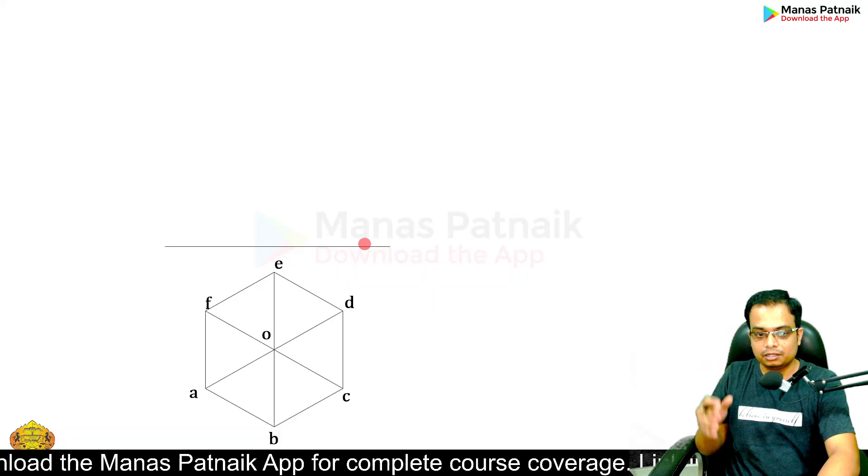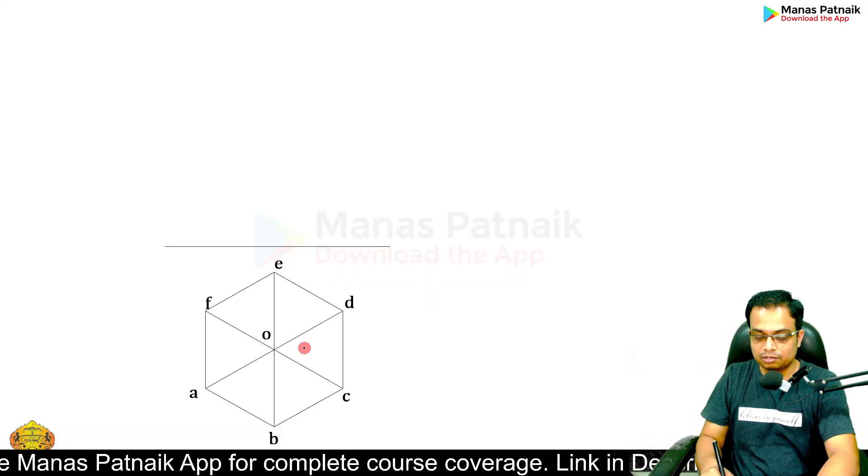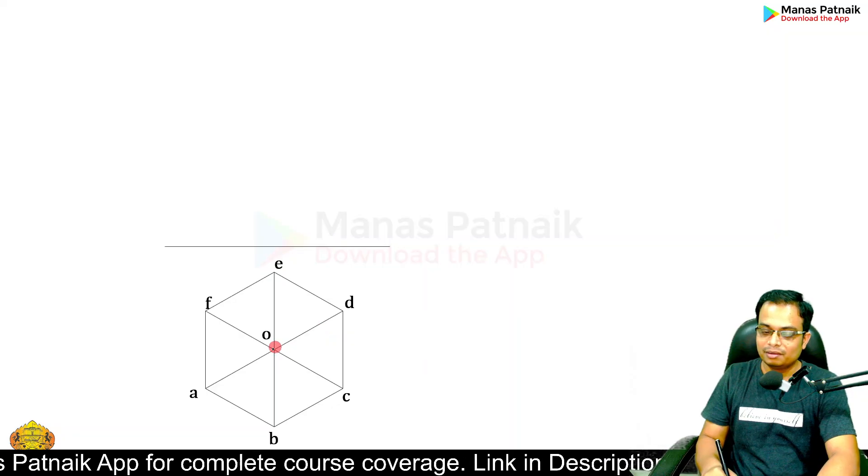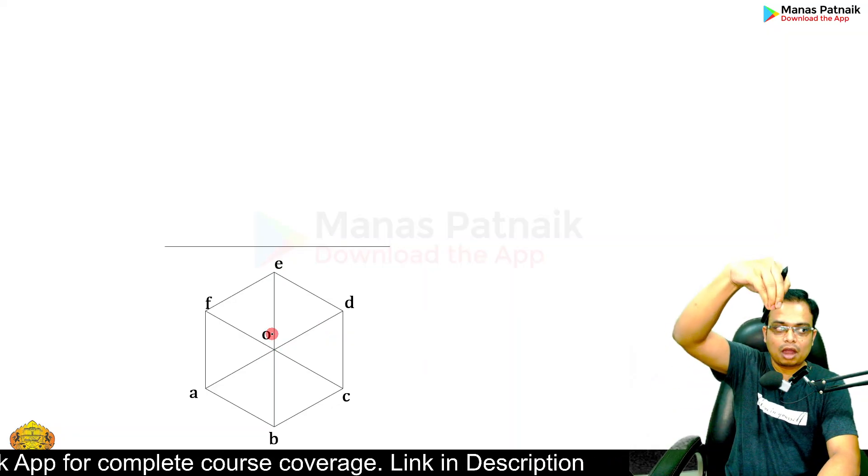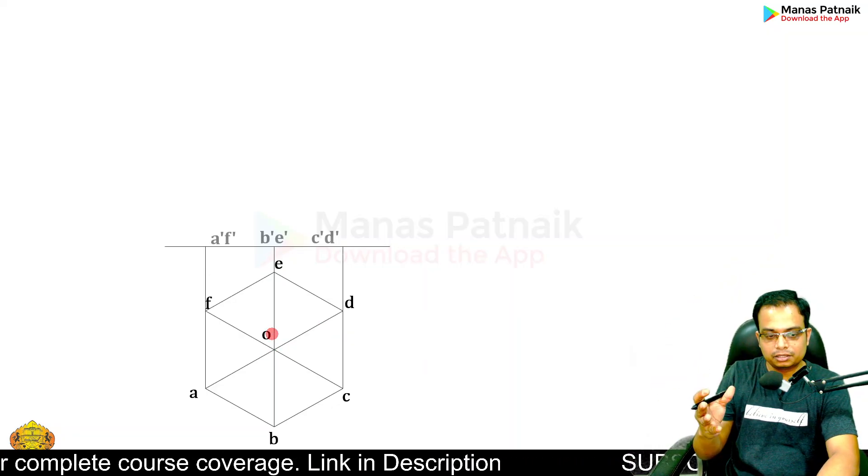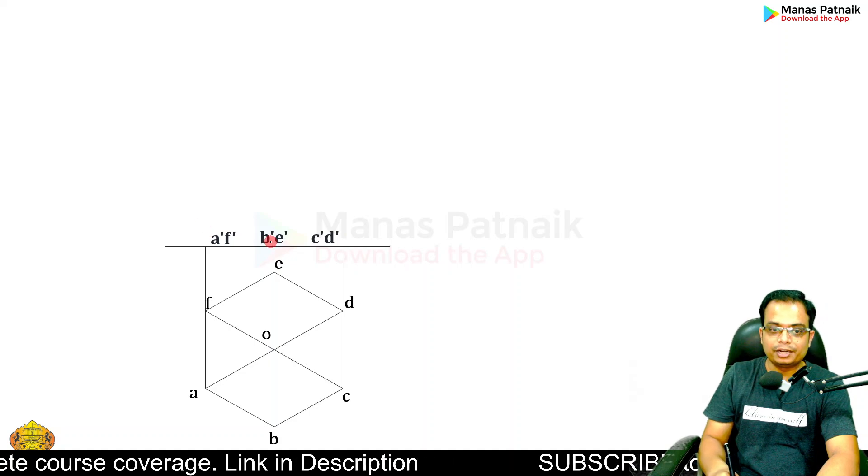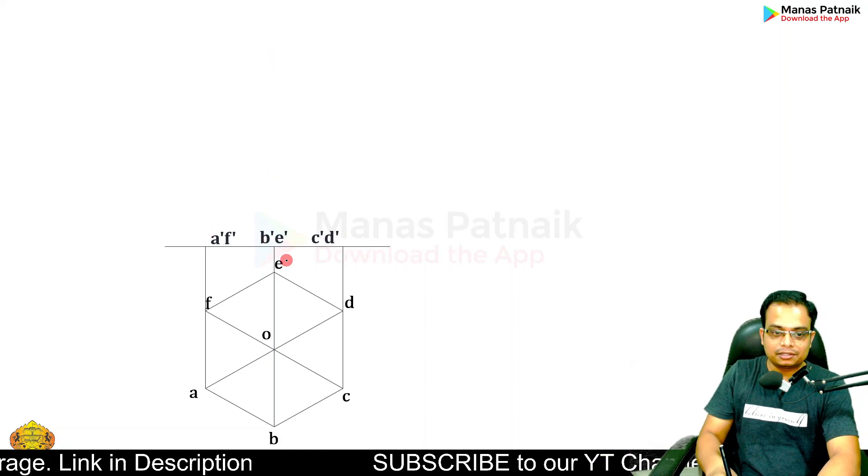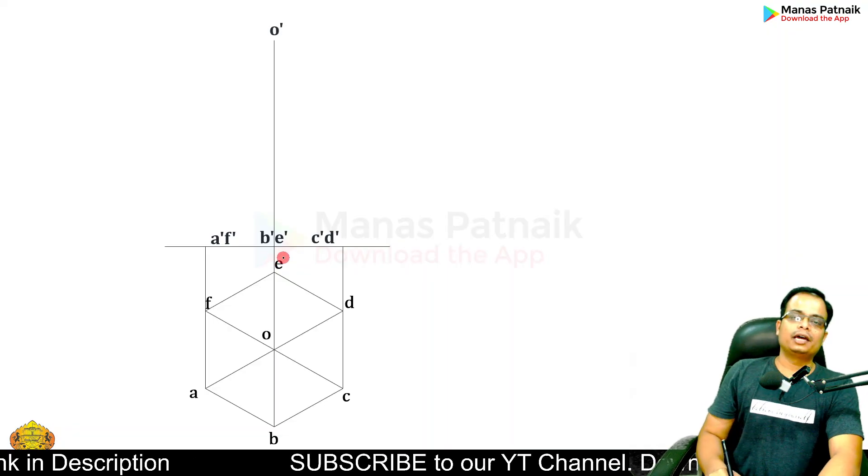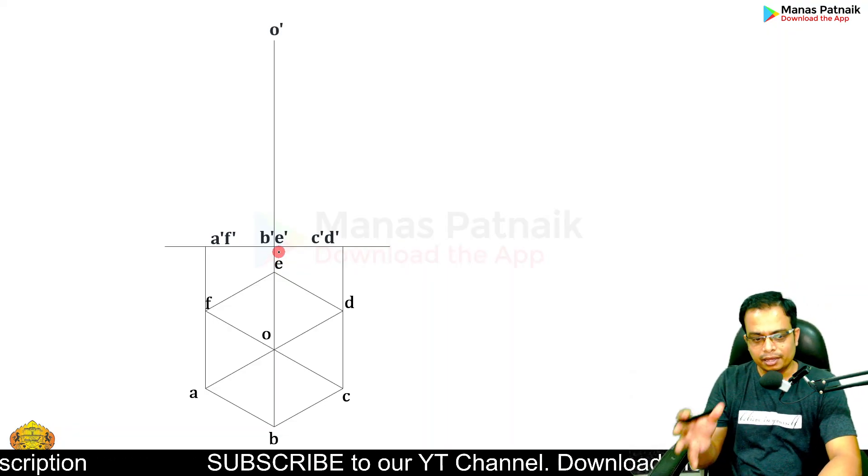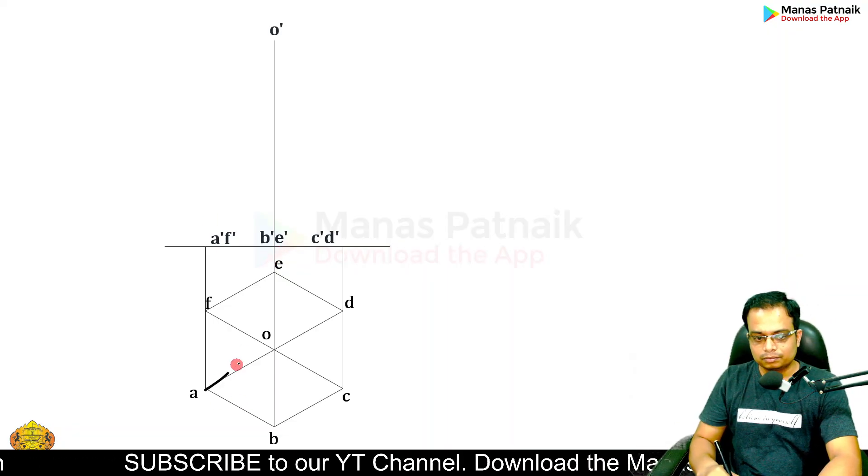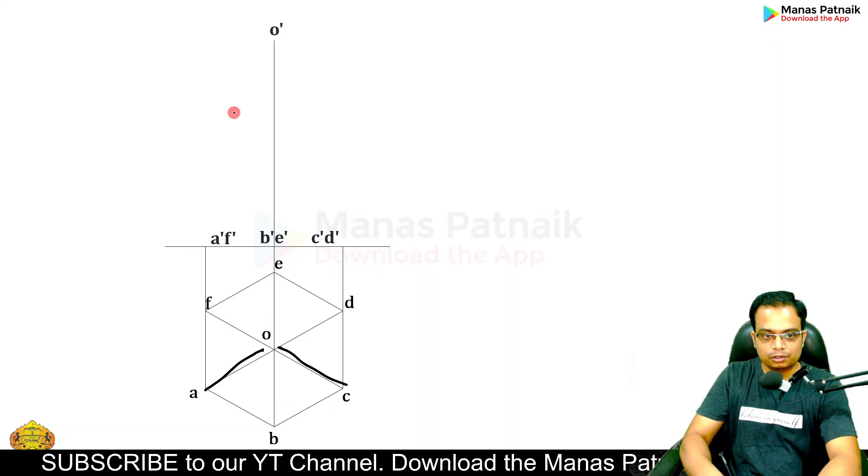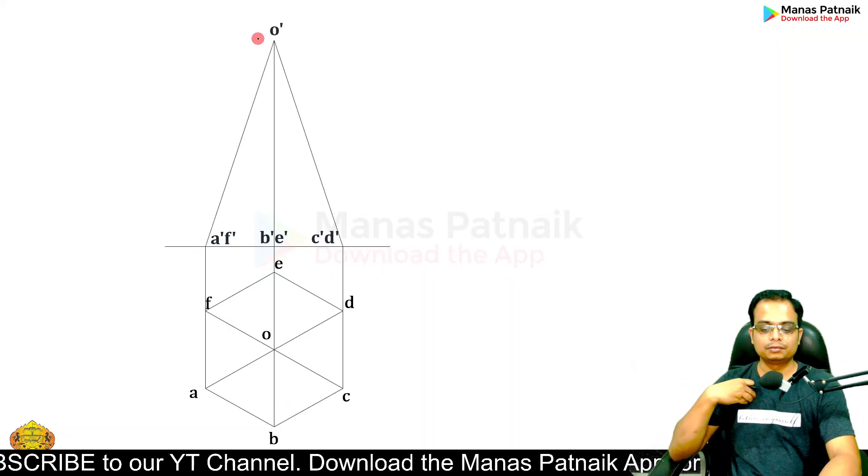Let's make the projectors. These are the slant edges meeting at the center. Then draw the projectors for the base points, and then the axis length is 80. Now join all the points - done.